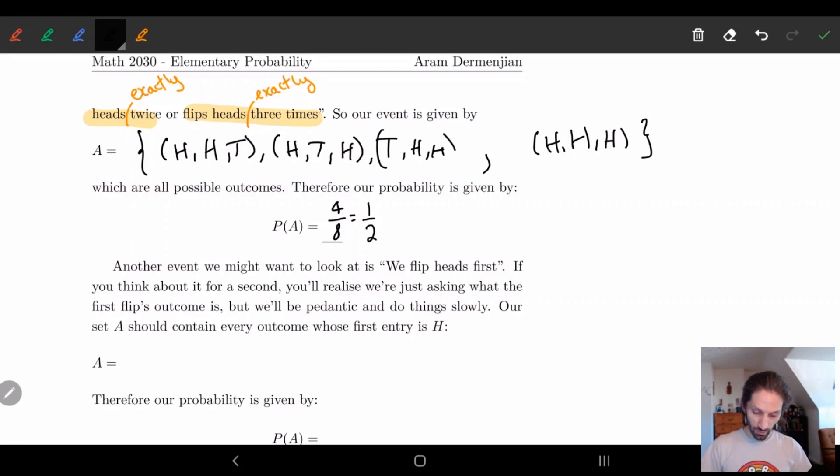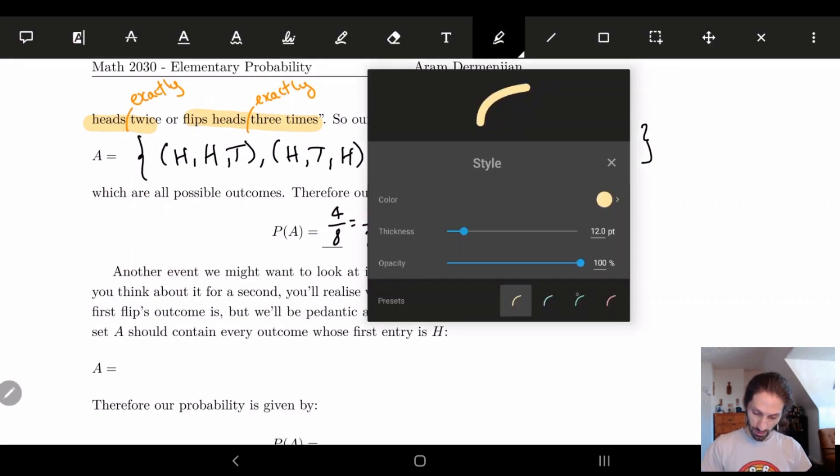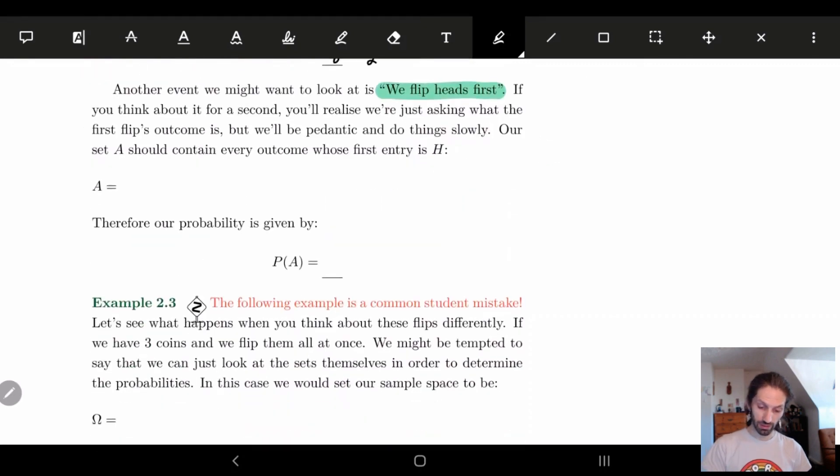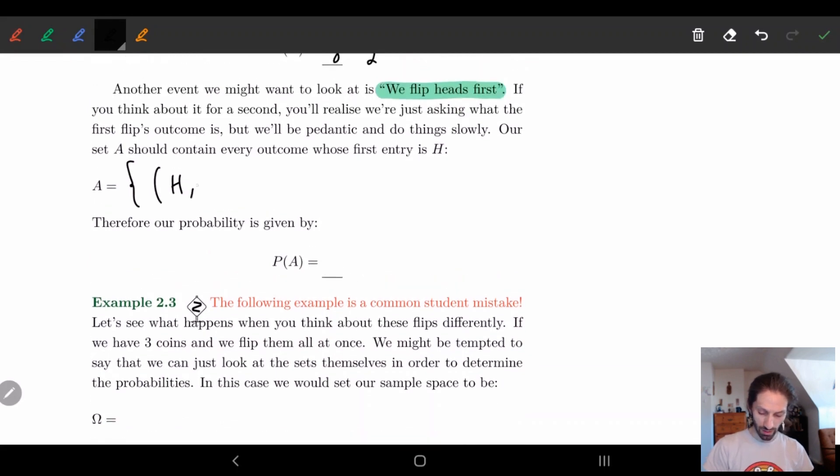So another event we might ask is the first coin turns out to be heads. And here this is actually fairly easily done from what we have already. So if the first one is heads, we can have HHH, HHT, we can have HTH, and we can have HTT. So these are our options. And we have four eighths, which is one half.